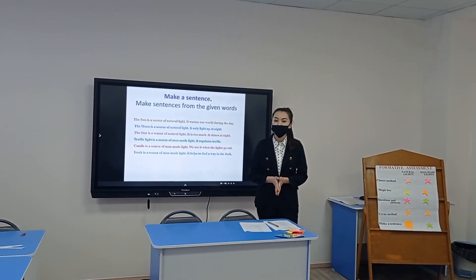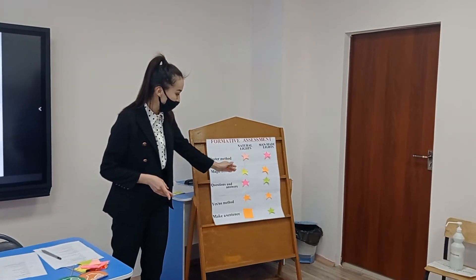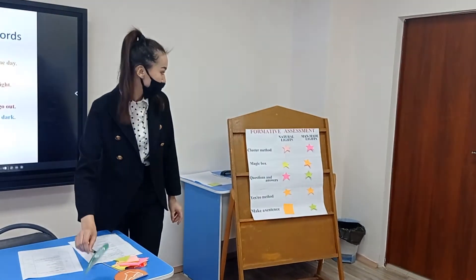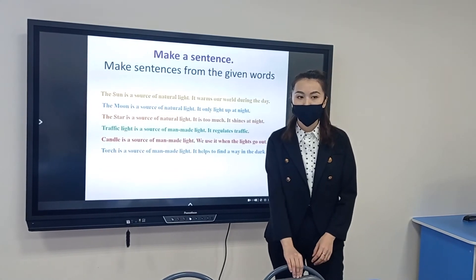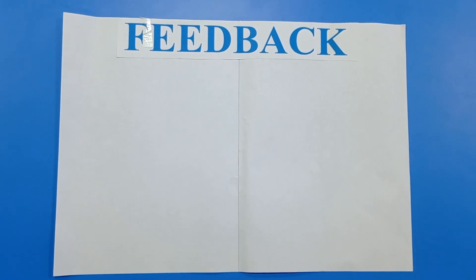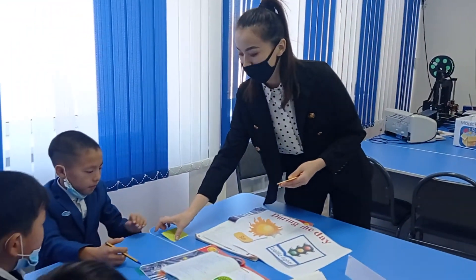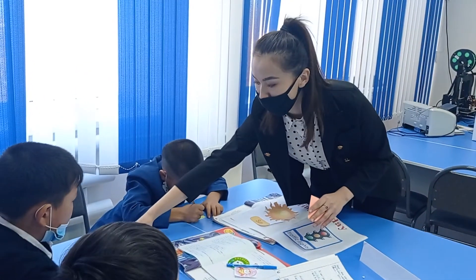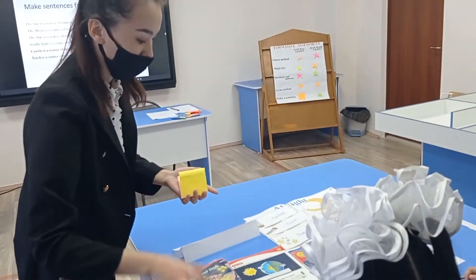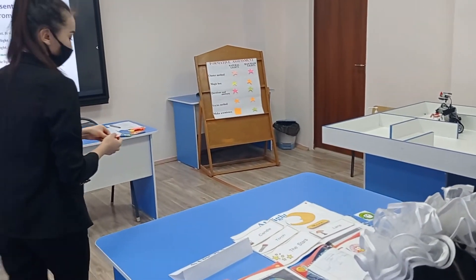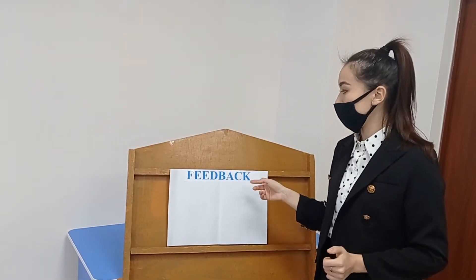Which team has the most points? Let's count. Natural light: 24 points. Man-made light: 25 points. Winning team: man-made lights! What have you learned today? Which task did you like? Learners make comments about the lessons and put stickers on the feedback paper.